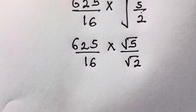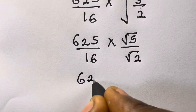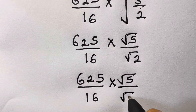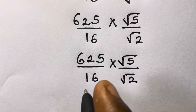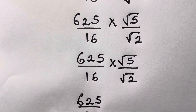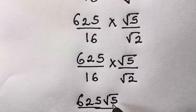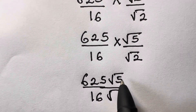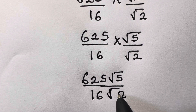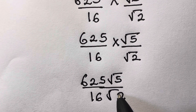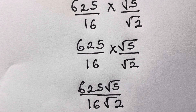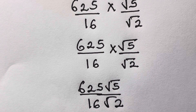Distributing the square root to both 5 and 2 we get 625 divided by 16 times square root of 5, divided by square root of 2. That gives 625 root 5 divided by 16 root 2. Rationalizing as before, this gives the answer 625 root 10 divided by 32. Thank you for watching. I hope you enjoyed this video — if you did, kindly like and leave a comment, share with your friends, and subscribe to my channel to stay updated.